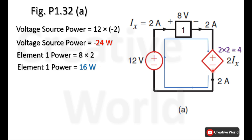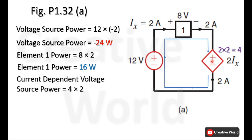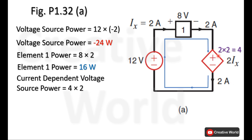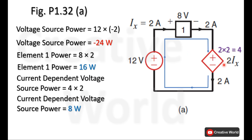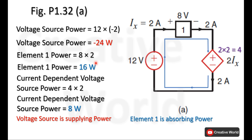Before calculating the power of the current dependent voltage source, we first calculate the voltage across it, which is 2 multiplied by ix, and ix is also 2, so the voltage across this source will be 4 volts. The current dependent voltage source power will be 4 volts multiplied by 2 amperes. The current is entering from the positive terminal and leaving from the negative terminal, so this current is taken with a positive sign. The power is 8 watts — the voltage source is supplying power, while element 1 and the current dependent voltage source are absorbing power.